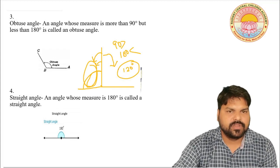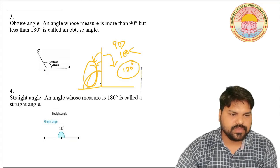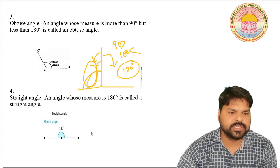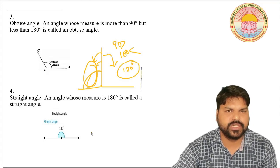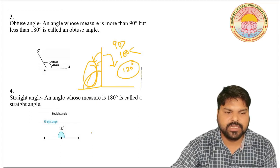The fourth angle is the straight angle. An angle whose measure is 180 degrees is called a straight angle.